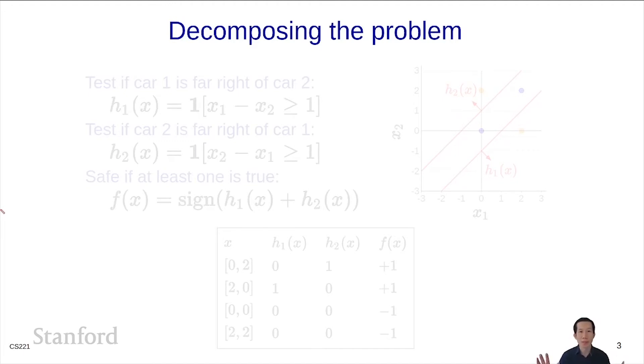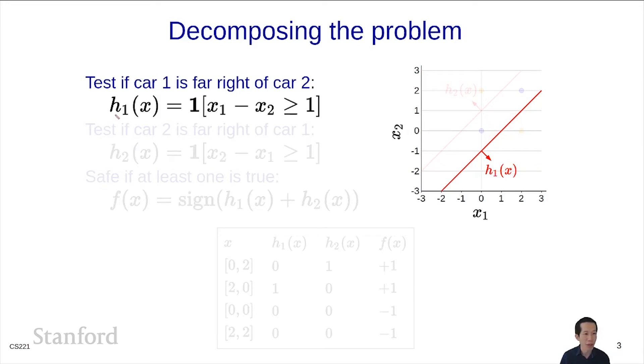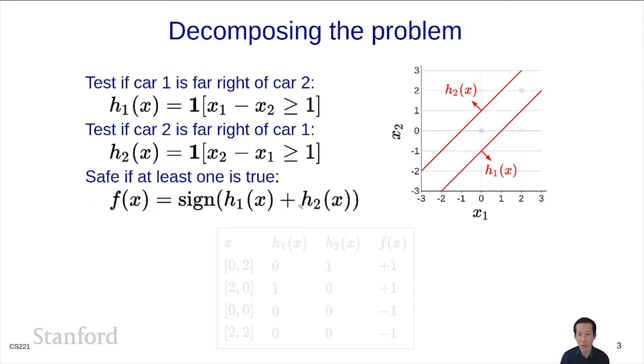The key intuition is problem decomposition. Instead of solving the problem all at once, we'll decompose it into two subproblems. First, test if car one is to the far right of car two, which is h₁(x) = 1[x₁ - x₂ ≥ 1]. Second, test if car two is far right of car one, which is h₂. Then predict safe if at least one is true, so f(x) = sign(h₁(x) + h₂(x)).